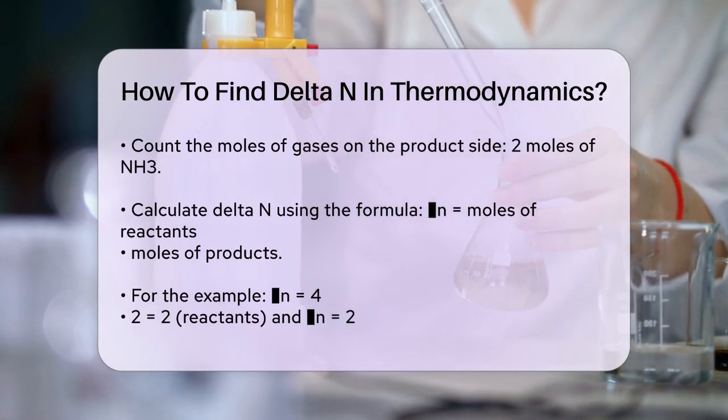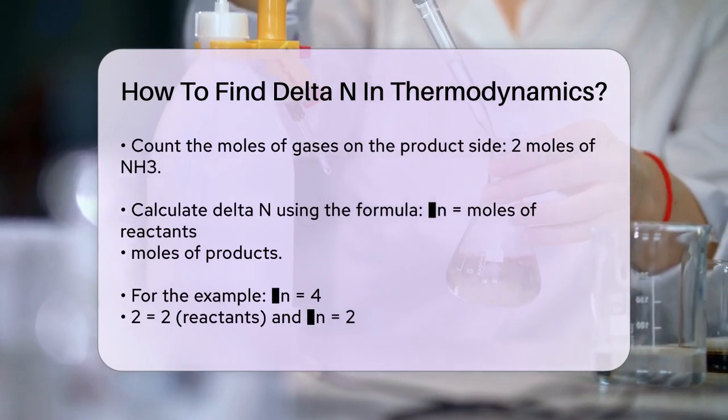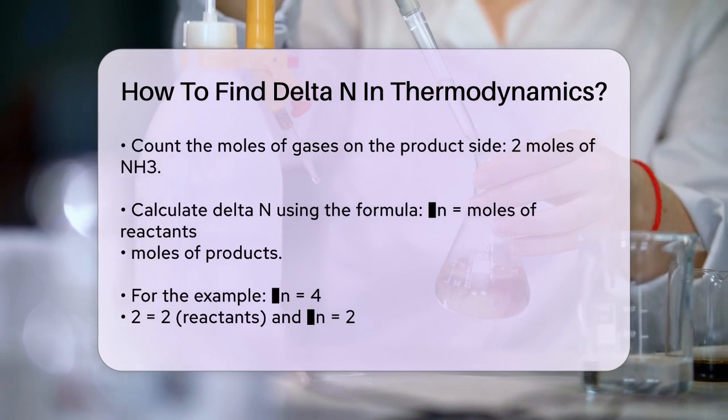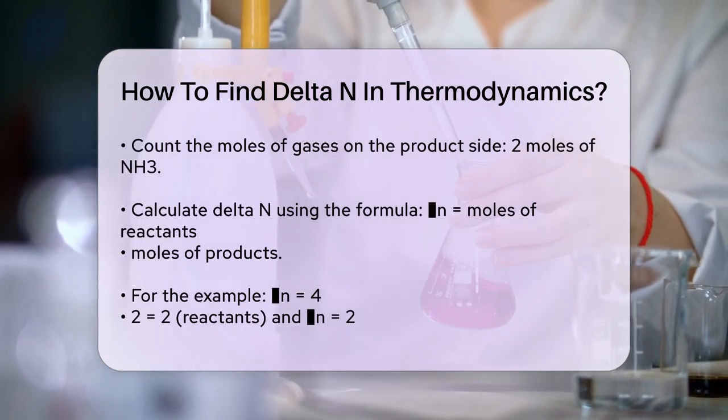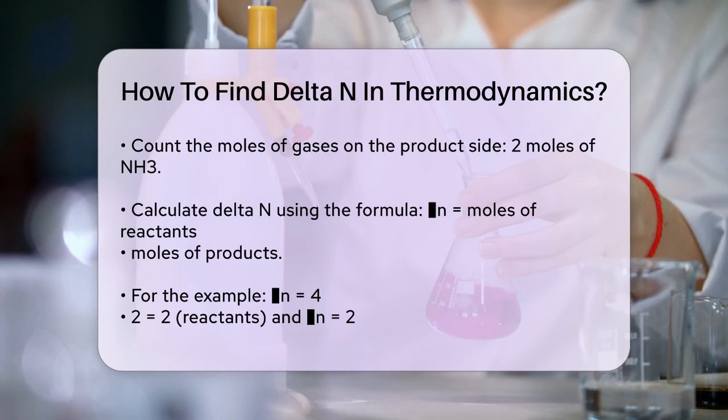Now calculate delta N by subtracting the number of moles of gases in the products from the number of moles in the reactants. Delta N equals moles of reactants minus moles of products. Delta N equals 4 minus 2.